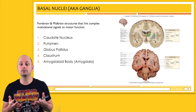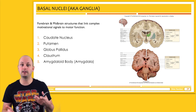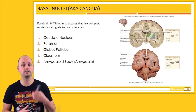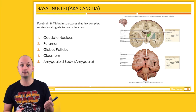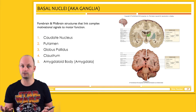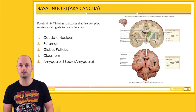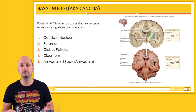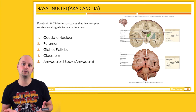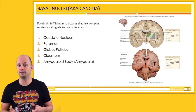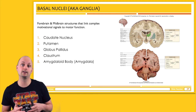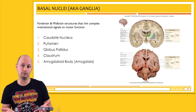Generally speaking, the basal ganglia play a role in both sensory functions and motor functions. We'll think about the motor functions first. We could very broadly describe the role that the basal ganglia play in movement by saying they gate or prevent unwanted movements.